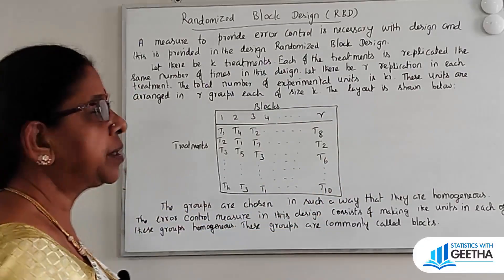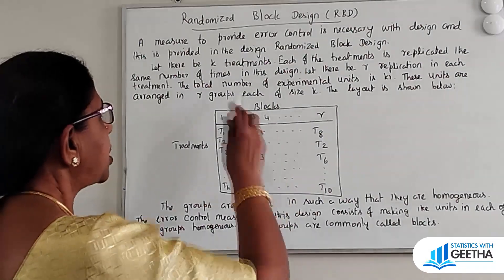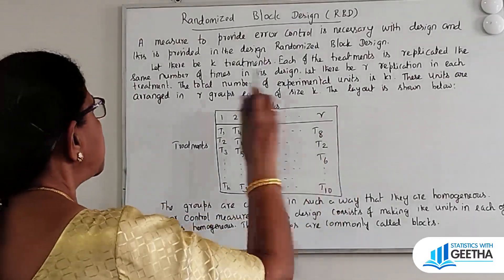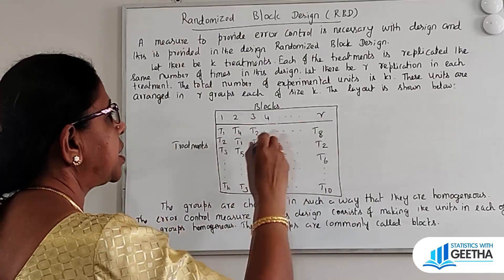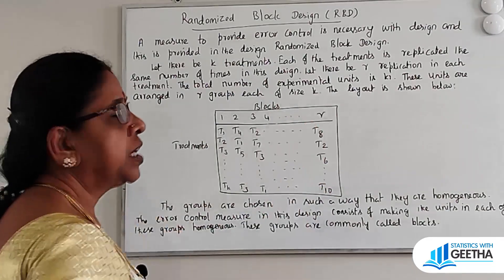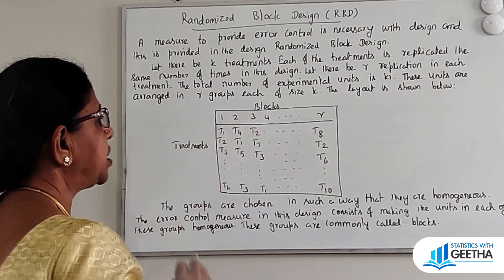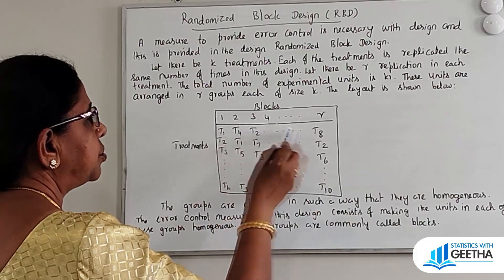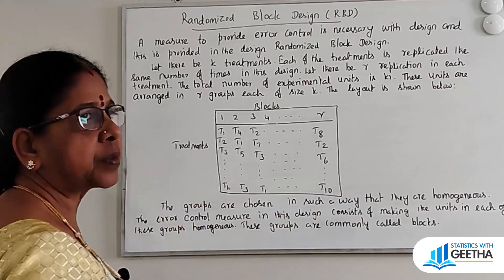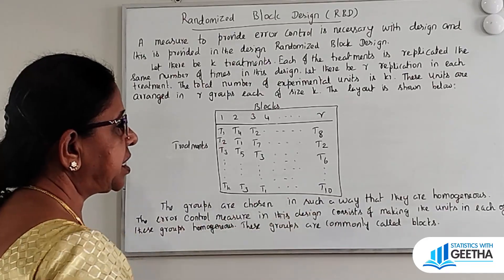The layout is shown where units are arranged in groups, each of size k. The columns represent blocks and the rows represent treatments — T1, T4, T2, and so on. The treatments are allocated at random, and the groups are chosen in such a way that they are homogeneous.